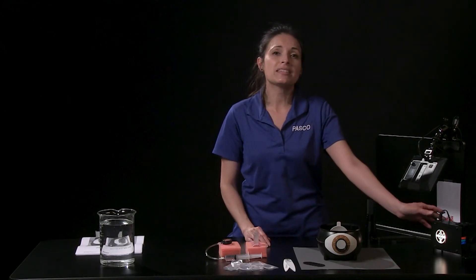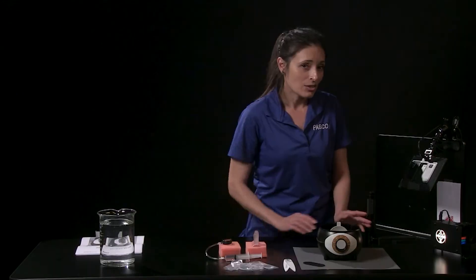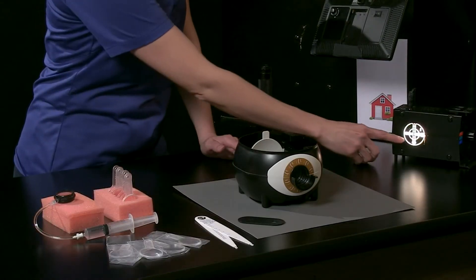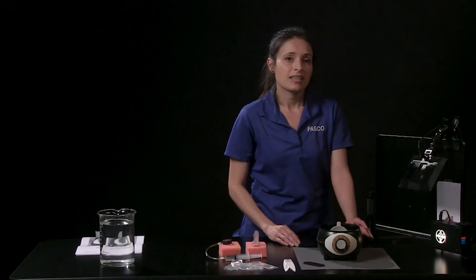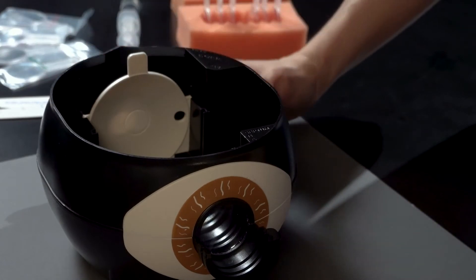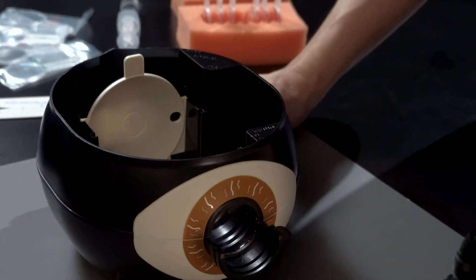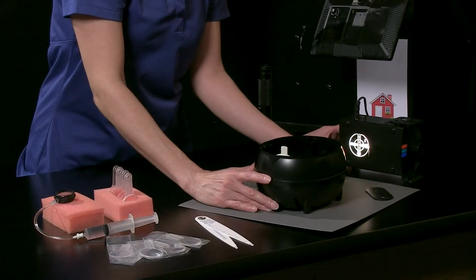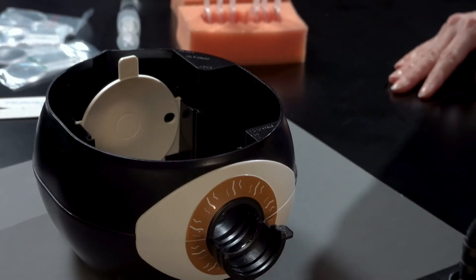I'm using the Pasco basic optics light source to investigate an object placed near the eye. Notice the dark arrow on the light source points down, and the bright arrow points to the left. When I point the eye towards the light source, you can see that light falls on the fovea.